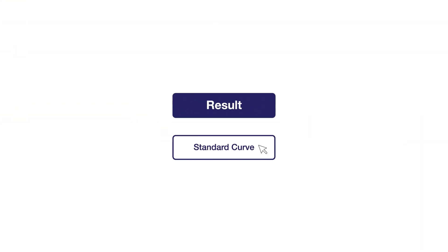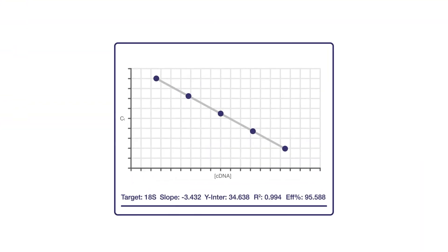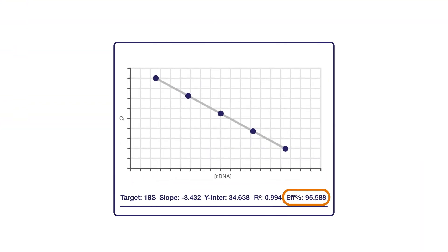Happily, the newer Applied Biosystems Instruments software does the efficiency calculation for you. Go to Results, then Standard Curve, and there it is.